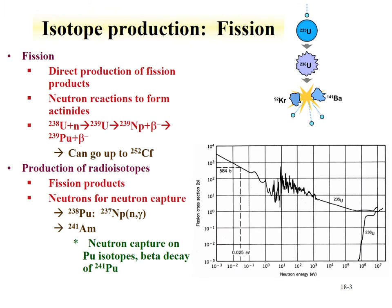One primary route for the production of isotopes is through the fission process. There are two main methods: one is through the direct production of fission products, where the fissioning of uranium-235 creates the isotopes of interest. Another is the formation of new isotopes through neutron reactions. For example, plutonium isotopes are produced through successive neutron capture — uranium-238 captures a neutron to form uranium-239, which beta decays to neptunium-239, then beta decays to plutonium-239. This route can continue up through americium, curium, berkelium, californium.